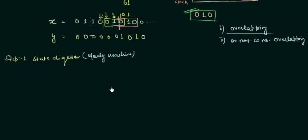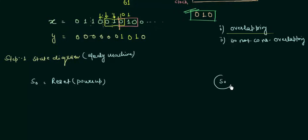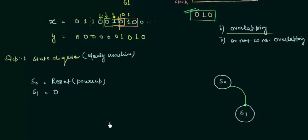To develop this state diagram I will consider it as a Mealy state machine. As soon as I switch on my sequence detector I am in state S0, which is the reset or power-up state — this is where we start detecting the bit stream. If I am in S0 and the first bit is 0, I move to the next state S1, where S1 corresponds to having seen 0. Input is 0 and output is also 0. If input is 1, I remain in S0 with output 0, because our first bit to match is not 1.